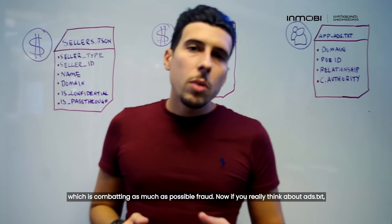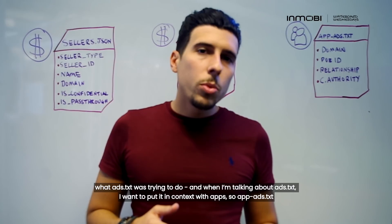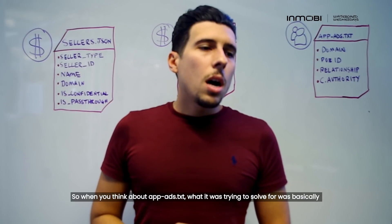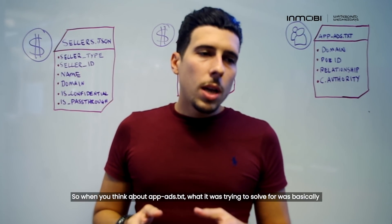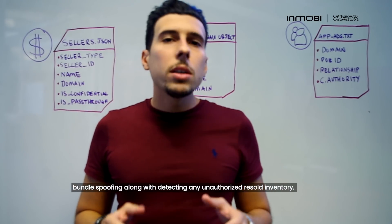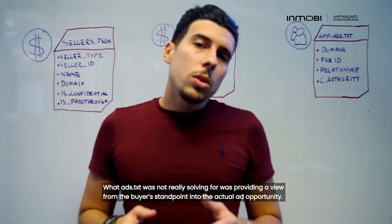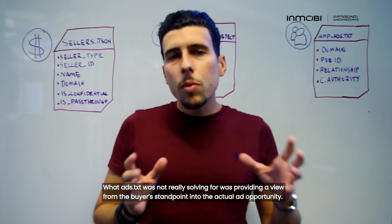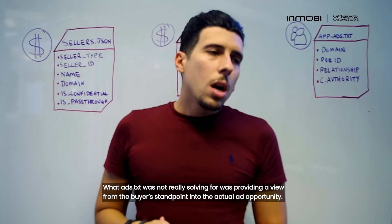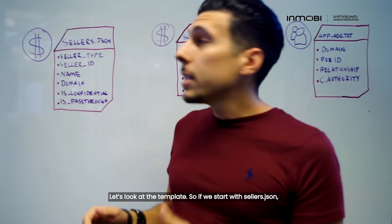If you really think about ads.txt — and when I talk about ads.txt, I want to put it in context with apps, so app.ads.txt, which was released at the beginning of this year, 2019 — what app.ads.txt was trying to solve for was basically bundle spoofing along with detecting any unauthorized resold inventory. What ads.txt was not really solving for was providing a view from a buyer standpoint into the actual ad opportunity. That's where these new two specs are coming into place, and let's look at their template.